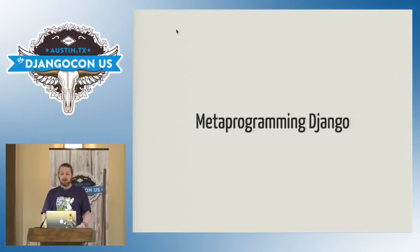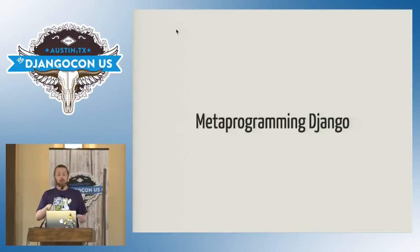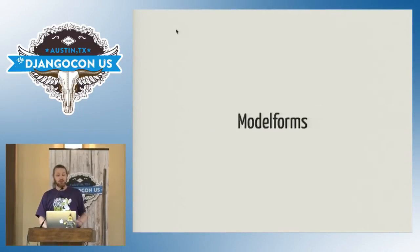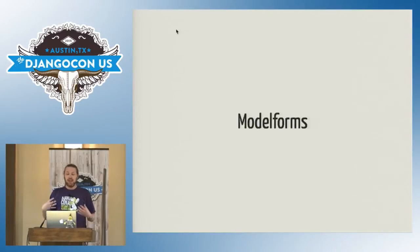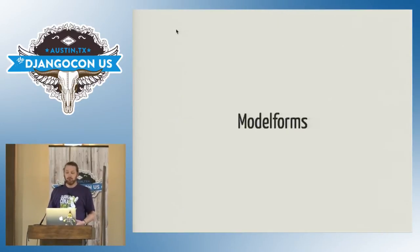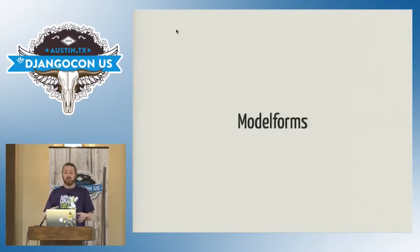So what does this metaprogramming mean when we move to Django? It means being able to do the same sort of thing we just did with Python objects, but do it with database models. One obvious place this is really useful is model forms. I have a Django model with a bunch of fields, and I want to be able to display a form to edit an instance of that model. I could define a form instance for each of my models and then add the fields I want to edit, or I can use metaprogramming.